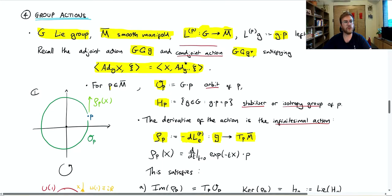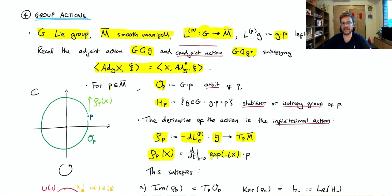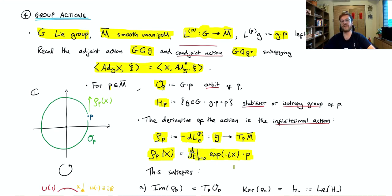A more concrete definition of the infinitesimal action is that the action applied to a Lie algebra element X is what you get if you exponentiate that element multiplied by a real parameter T, apply that group element to the point P, and differentiate at T equals zero. So you can really feel from this definition that it is the momentum of the point P when being pushed in the direction of the Lie algebra element X.